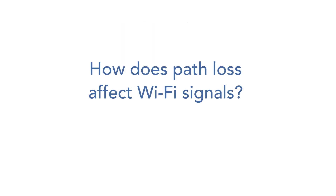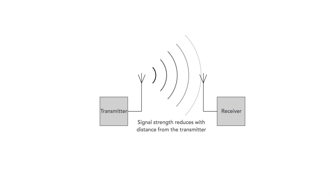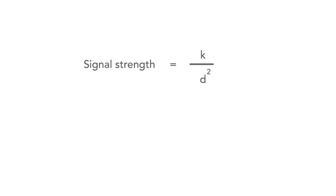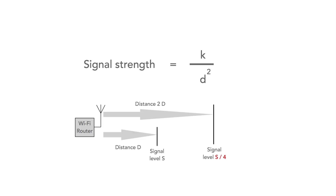So let's look at path loss first. Like all forms of radio wave — in fact all forms of electromagnetic wave — the signal strength reduces as it moves away from the source. As it spreads out the signal intensity falls, and it falls according to an inverse square law. In other words, if the distance is doubled the signal falls to a quarter.